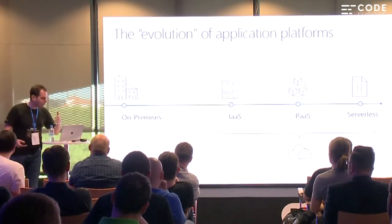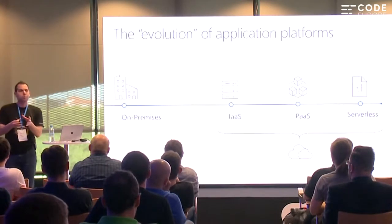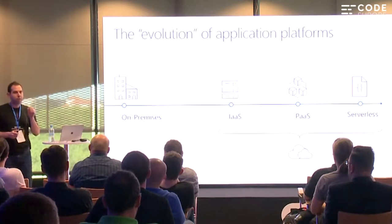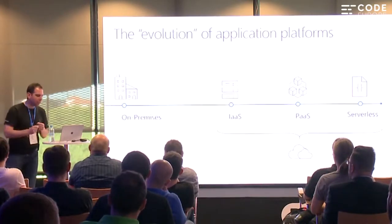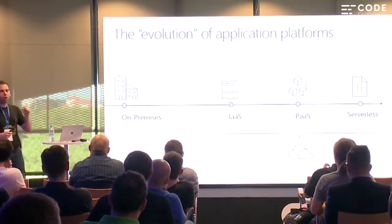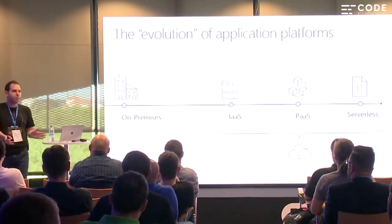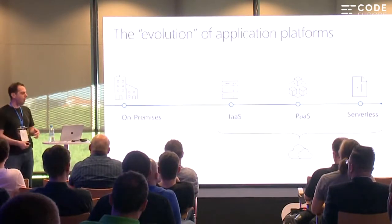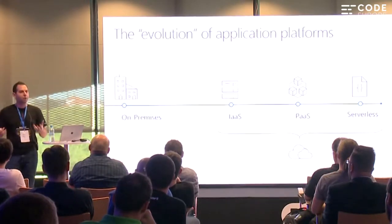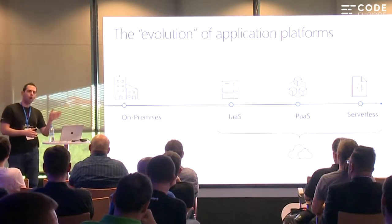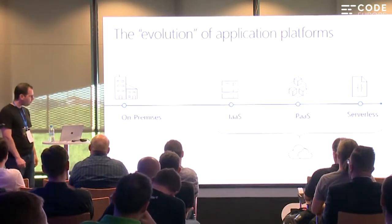The next iteration is Functions as a Service. Your code isn't running and you're not being billed for it. When a certain criteria is met — someone hits an endpoint, a message is added to an event hub, or an image is added to blob storage — that piece of code fires off, does what it does, exits, and you're only billed for those milliseconds or seconds. It's super inexpensive, and lets people build new app ideas without incurring costs every month.